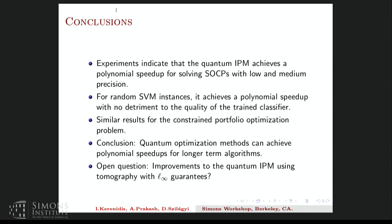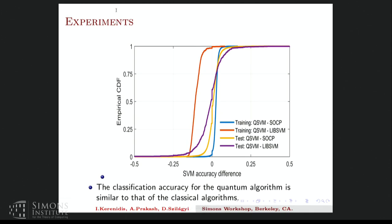So the experiments that we can make, like it's of course a difficult task to benchmark QML algorithms or quantum optimization algorithms. Yes, so it's a graph of the empirical CDF between the SVM accuracy differences for the two algorithms. Which is the classical one here? So it's a difference between the quantum minus the classical accuracy difference. So the ideal plot would look like one which goes to zero and then rises to one.